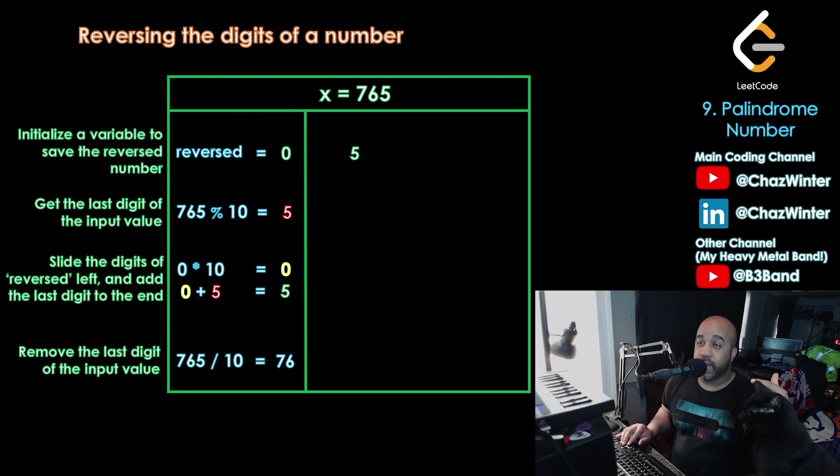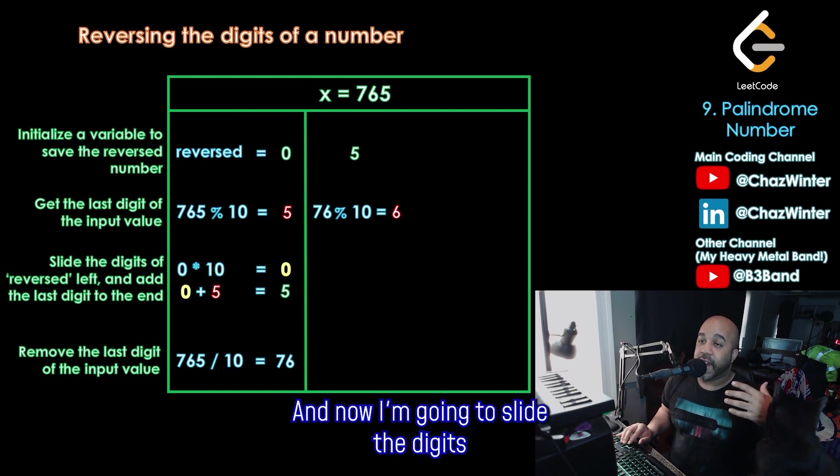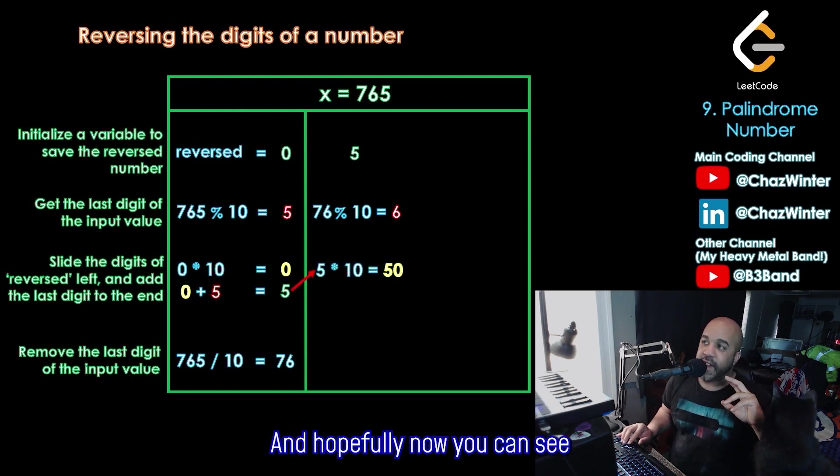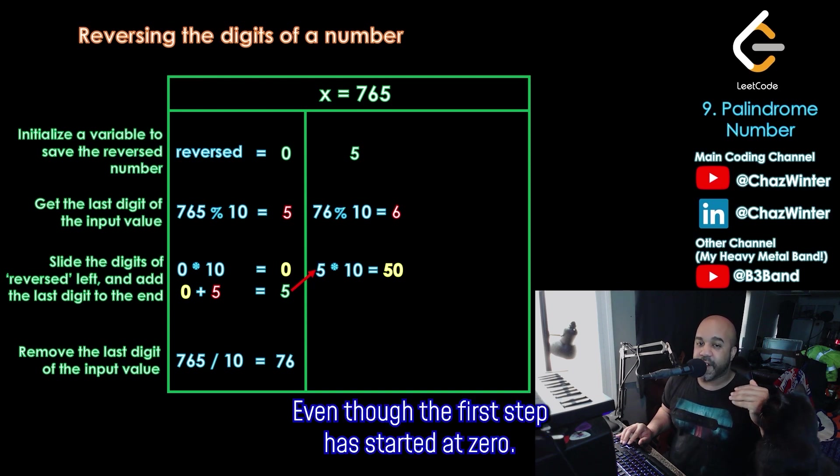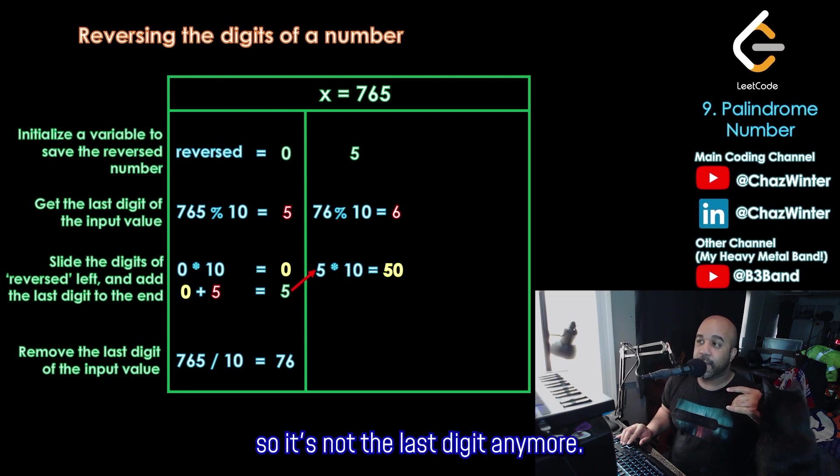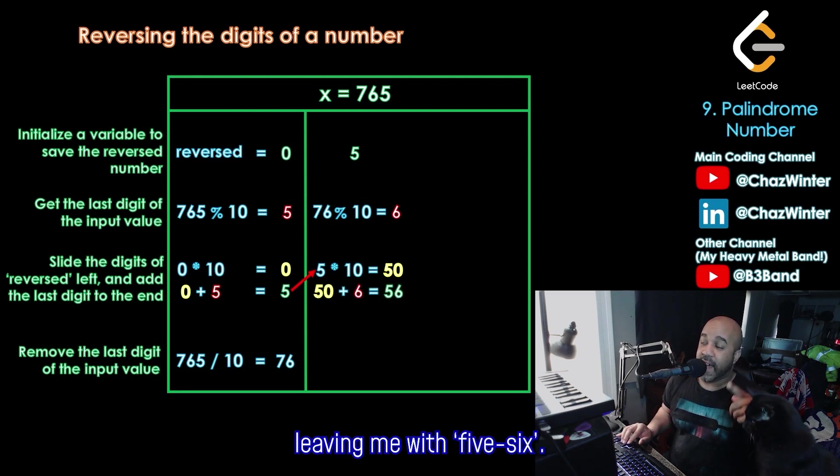So let's get the last digit of the input value. This time it's 76. That's going to be mod 10. That gives me 6. And now I'm going to slide the digits of reversed to the left by multiplying by 10. So 5 times 10 equals 50. And hopefully now you can see why I had to multiply by 10. Even though the first step, it started at zero, I need this algorithm to work for all numbers, even one digit numbers. So now I've successfully moved the 5 so it's not the last digit anymore. Now it's the second to last digit. And I can add that 6 from the previous step, leaving me with 56.